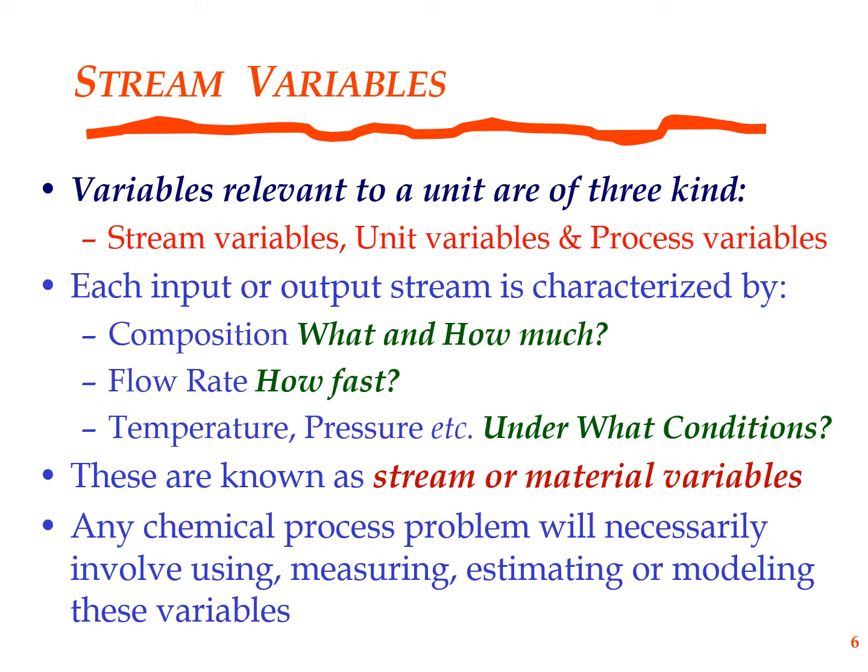Oftentimes what you do is measure these entities. In a chemical process, in a chemical industry, you have a variety of sensors that measure flow rate, that measure compositions, that measure temperature, that measure pressure. This is critical to understanding how any system behaves.